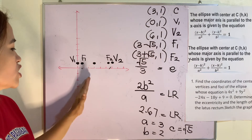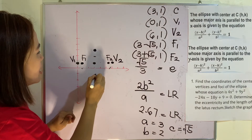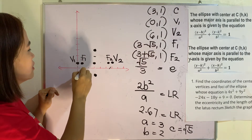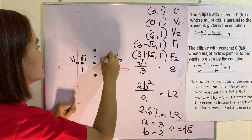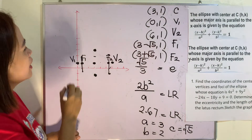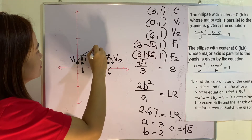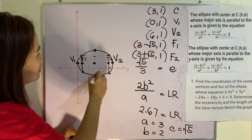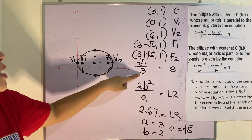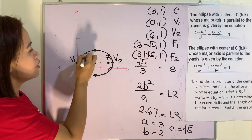If we sketch the graph, b equals 2, so the semi-minor axis extends 2 units up and down. The length of the latus rectum is 2.67. The eccentricity is square root of 5 over 3, which is approximately less than 1, as expected for an ellipse.